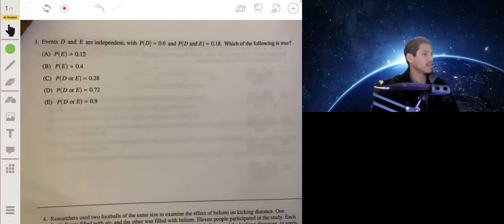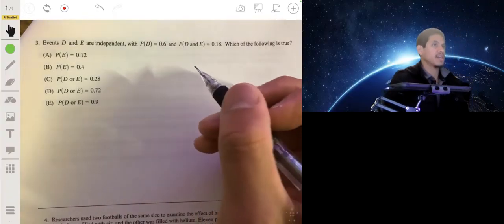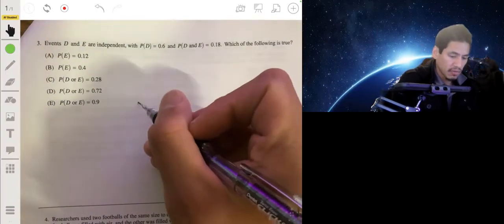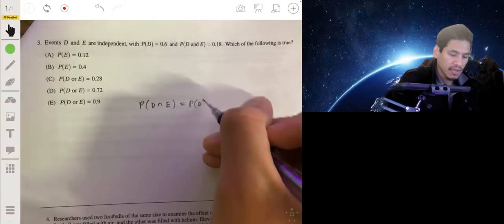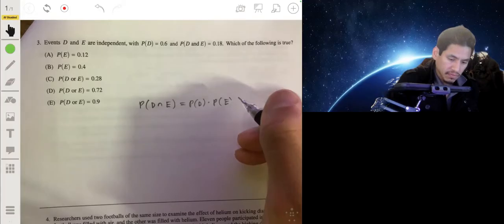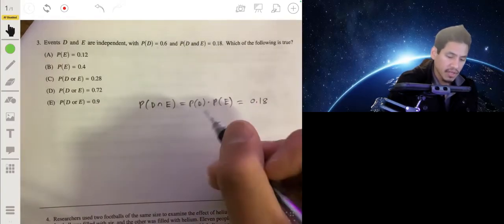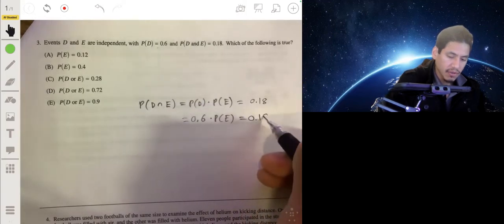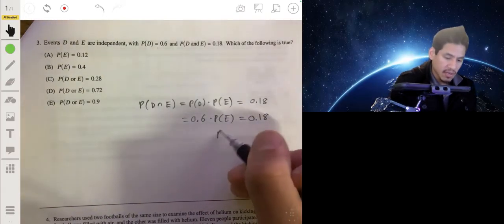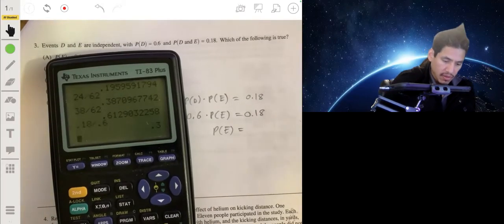Events D and E are independent. The probability of D equals 0.6, and the probability of D and E is 0.18. Which of the following is true? If two events are independent, that means the probability of one happening is not going to change or affect the probability of the other happening. So if you were to find the probability of D and E, that's just the probability of D times the probability of E. And that's 0.18. The probability of D is 0.6, so to find the probability of E, you just divide 0.18 by 0.6. So the probability of E would be 0.3.